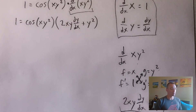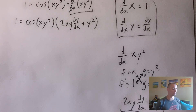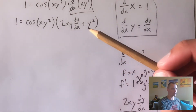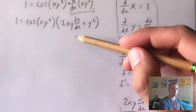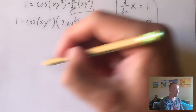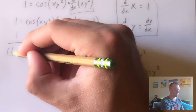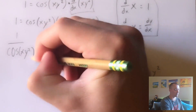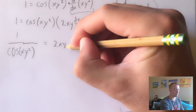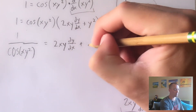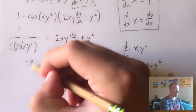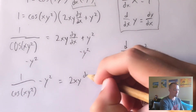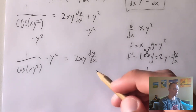Now that we've taken the derivative, we want to move everything that doesn't have a dy/dx in it over to the other side of the equation. Since we only have a single dy/dx term, that's not too difficult. We divide cosine of x times y squared over to the other side, giving us one over cosine of xy squared, equals 2xy dy/dx plus y squared. Then we subtract y squared over to the other side.